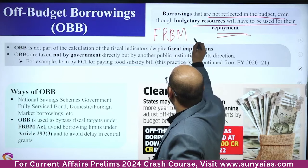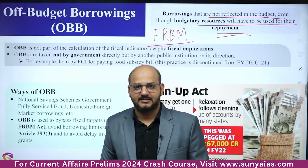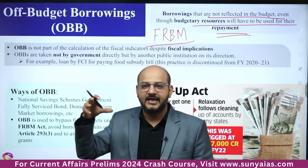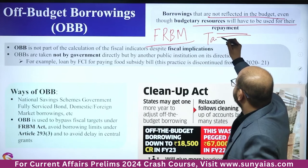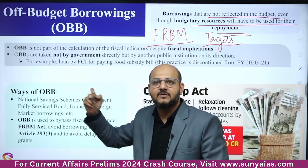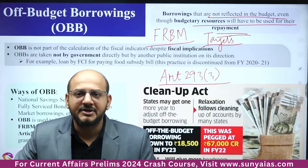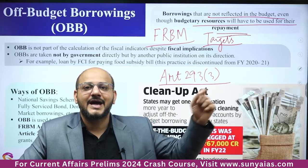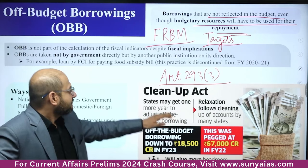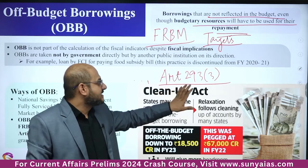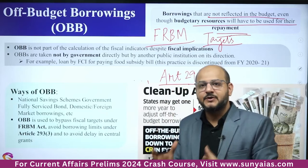There is an FRBM Act that has given certain fiscal prudence targets to state governments, so states do not borrow more than they can maintain. To meet these FRBM targets and to get grants from the central government, Article 293 — specifically Article 293, Clause 3 — sets certain limitations requiring the permission of the central government for borrowing. UPSC has already asked a question on Article 293; they may now ask about off-budget borrowings.